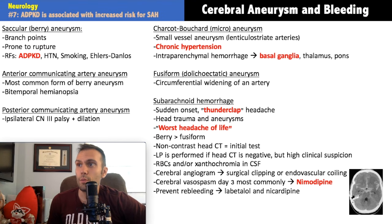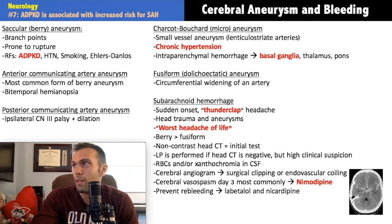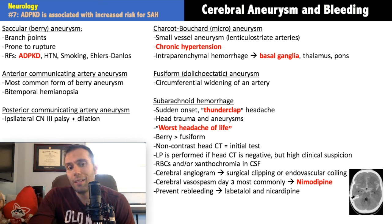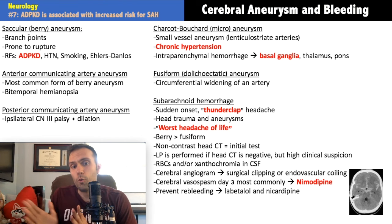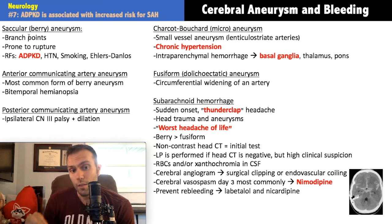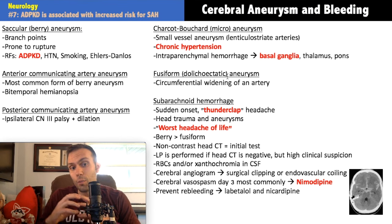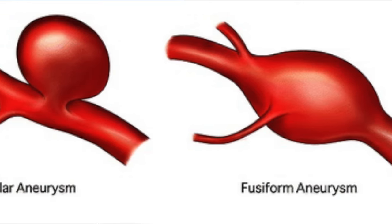Now let's discuss aneurysms. An aneurysm is a rounded outpouching of a vessel. The most important type to know is the saccular or berry aneurysm. Berry aneurysms typically occur at branch points — where one vessel branches into two — because these points have higher mechanical stress and greater probability of rupture. They arise specifically at branch points in the circle of Willis and are much more prone to rupture than fusiform aneurysms, which involve circumferential widening all the way around a vessel.